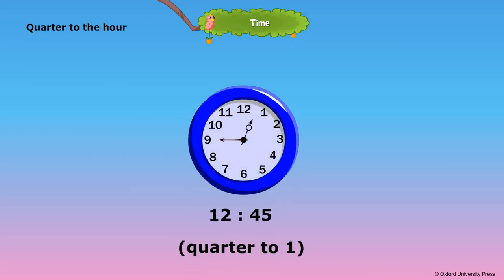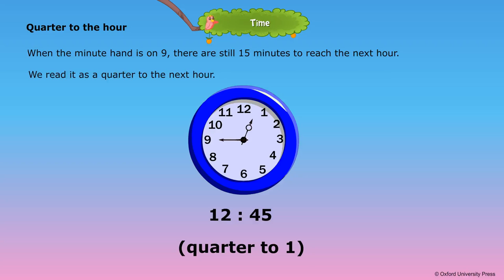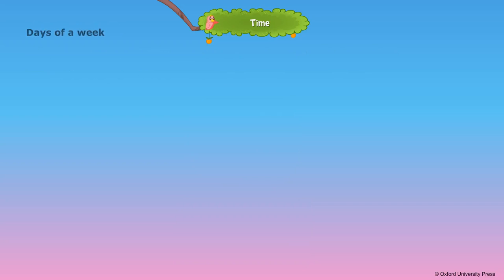Quarter to the hour. When the minute hand is on 9, there are still 15 minutes to reach the next hour. We read it as a quarter to the next hour. 12:45 or quarter to 1.